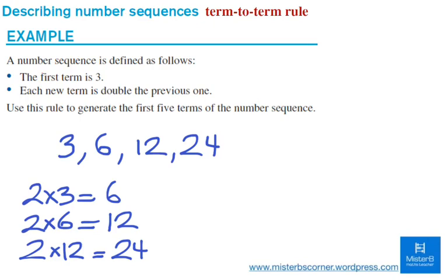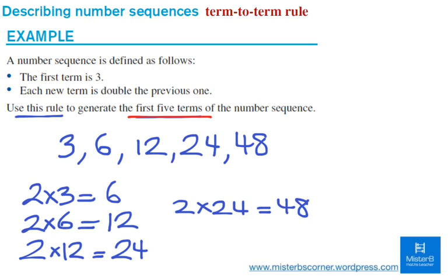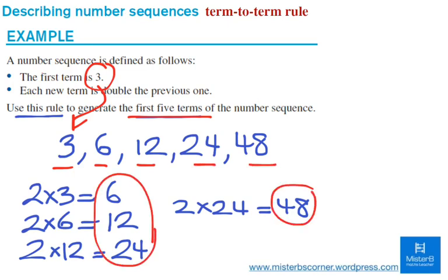So it says, use this rule to generate the first five terms. Okay, so I'll go one more, 2 times 24, I will get 48, so the fifth term will be 48. Now that the question says first five terms, I will include the first term in my list, so it's going to be 1, 2, 3, 4, 5 terms, but basically I will be calculating four new terms. So this is how term-to-term rule works.